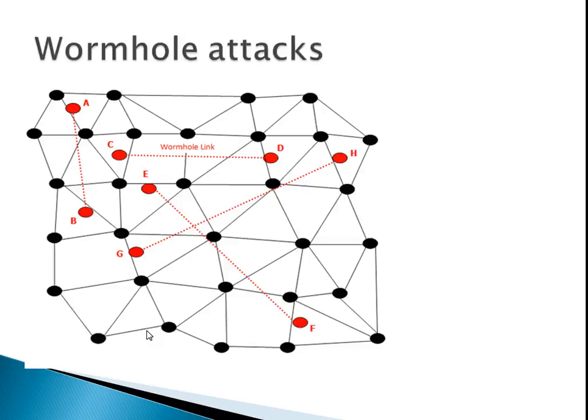So what are wormhole attacks? Wormhole attacks are a kind of attack in a mobile ad hoc network where nodes join a link in a network between one or two nodes and get data from these nodes that they are not supposed to get. As you can see from this graph, when you look at points A and B, there is a wormhole link there. Similarly at points E and F, G and H, and C and D — those are wormhole links.